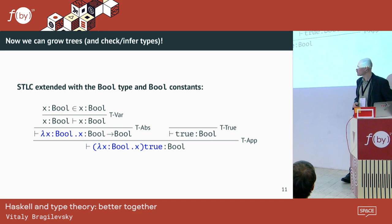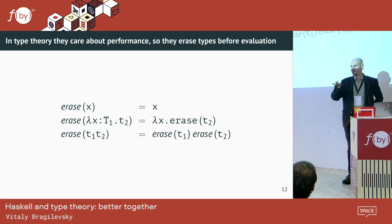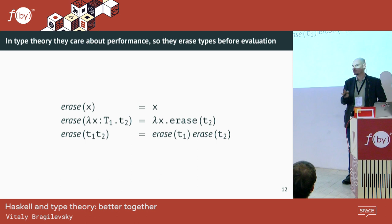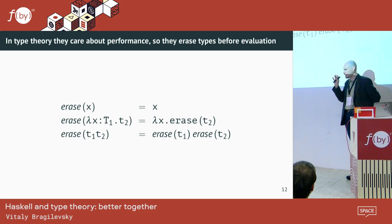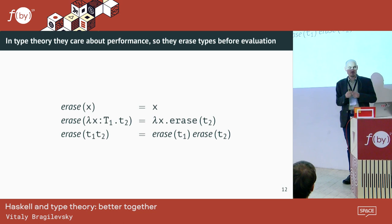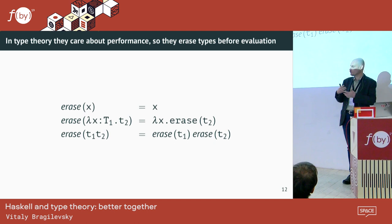We can also erase types. In some languages like Java or C# they keep types during evaluation, but in type theory we can just erase them. When you're talking about type theory, there is a little bit of pragmatics — you think about how to compute all this stuff on real hardware. In the 1940s there was no hardware for doing that, but they were thinking about it.